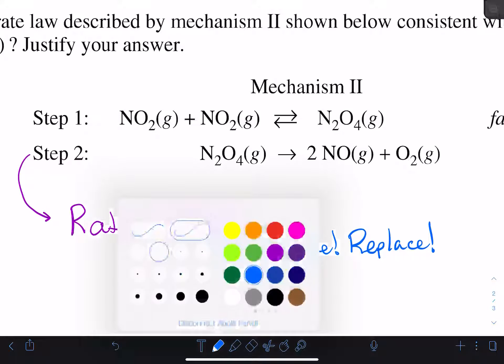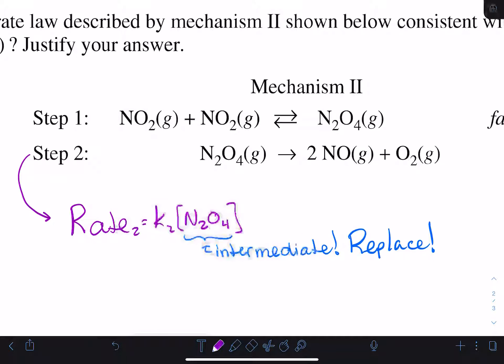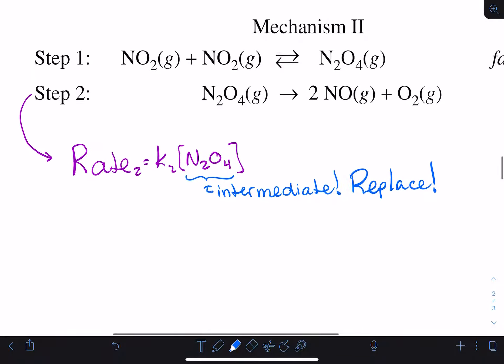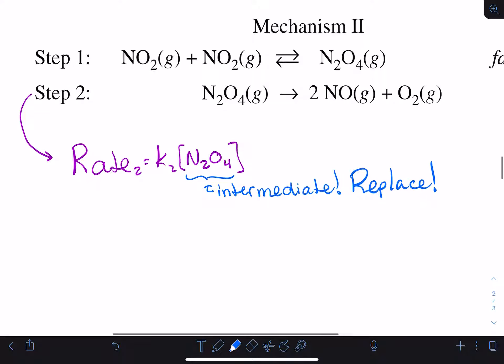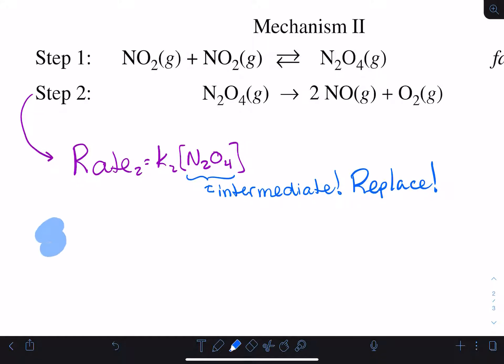From step 1 we can use the fact that this is reversible—even if you're not told it's reversible you have to assume it's reversible—but we can use that fact to say that since step 1 is fast and reversible...